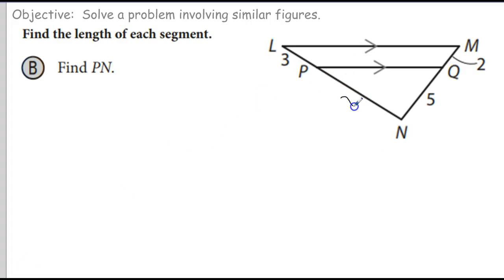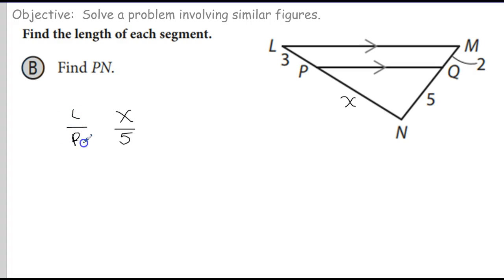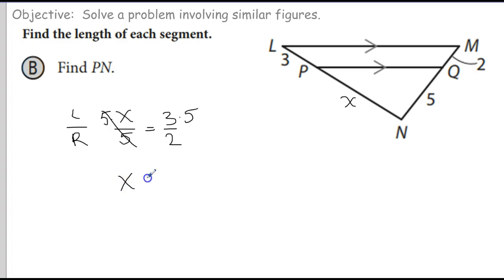Next problem: Find PN. So this is my X here. I'm going to compare X to 5 — left side to right side — just like on the shorter side, 3 goes to 2. We multiply by 5 on both sides to get X by itself. So X is equal to 15 over 2. Fully reduced. Final answer.